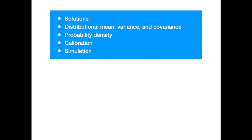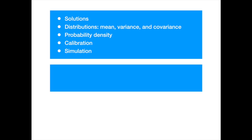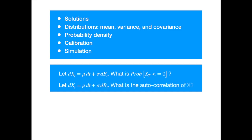But before we start with the geometric Brownian, could you help answer a couple of questions about the arithmetic Brownian motion, please? The first question is: what is the probability that the arithmetic Brownian motion value at time t will be negative? The second question relates to the autocorrelation. We derived formulae for the variance and covariance of the arithmetic Brownian motion. Could you derive formulae for the autocorrelation of the process? Answers in the comments, please.